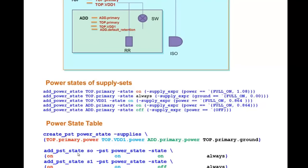In state S0, we can see that all the SupplySet functions are in On state. And in state S1, the Add.Primary Power is switched off.